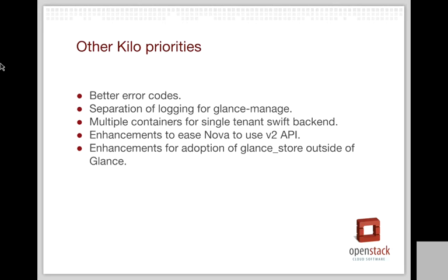We are also planning to help Nova, the OpenStack compute service, use version 2 of the Glance API. There are some enhancements needed either to the Glance client or the Glance service, and Glance version 2.3 was one of them. More work is being done in Kilo and we hope to continue the same. Enhancement for adoption of Glance Store outside of Glance is another undertaking, with the main objective being to provide a cleaner store API for other OpenStack services and users to leverage the Glance store drivers and use the backend in a more effective manner.